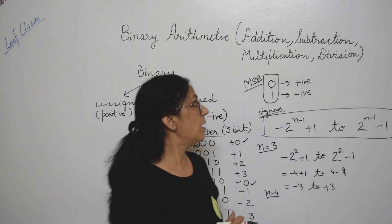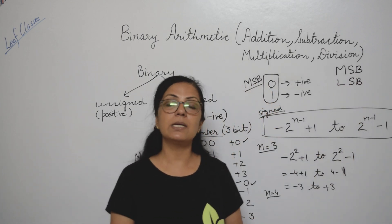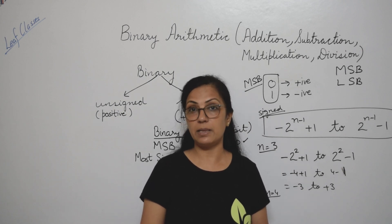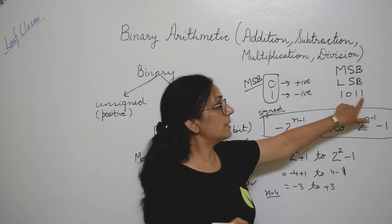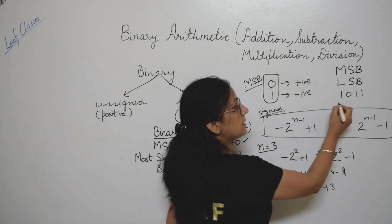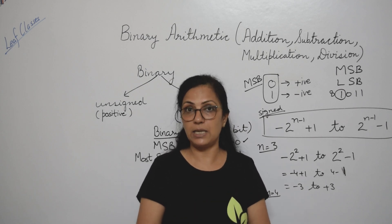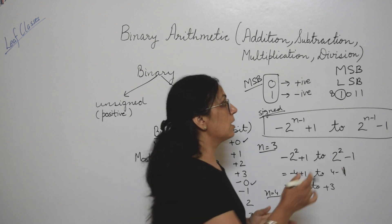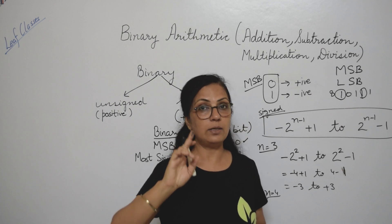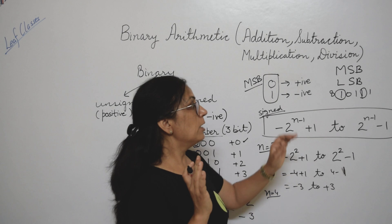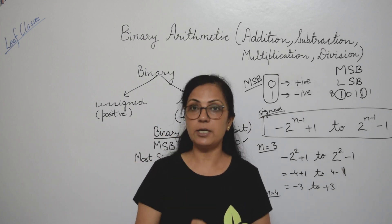One more important thing: what is MSB and LSB? MSB is most significant bit and LSB is least significant bit. Least means smallest value, most means largest value. For example, take 1011. The positional values are 1, 2, 4, 8 from right to left. The leftmost 1 has a decimal value of 8 — the highest value — so it is the most significant bit. The rightmost 1 has a value of 1 — the lowest — so it is the least significant bit. Always remember: leftmost is MSB, rightmost is LSB.